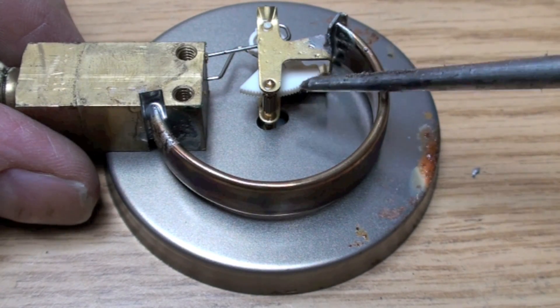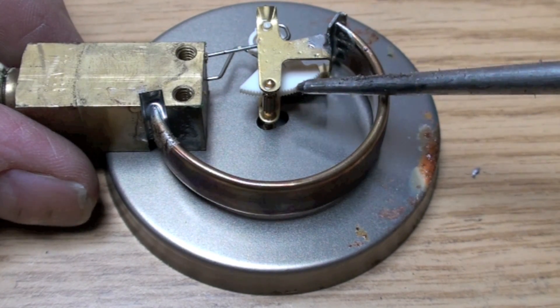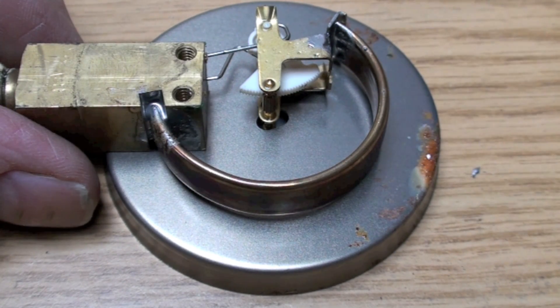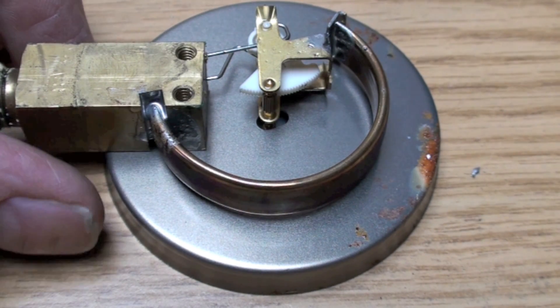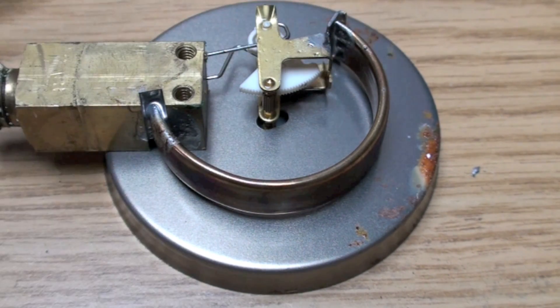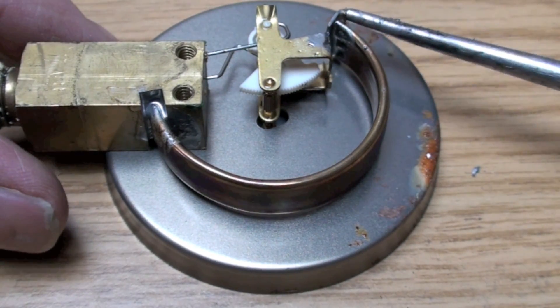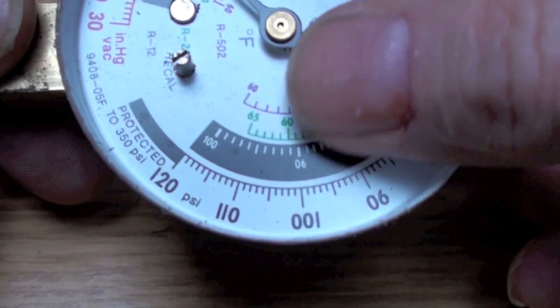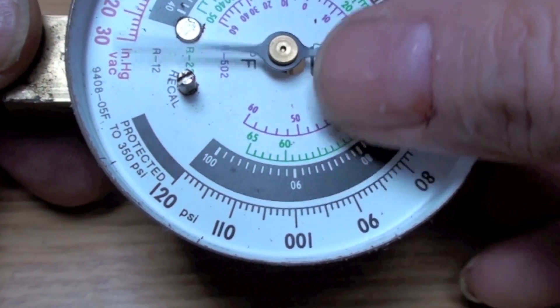Now you can see that little gear. Now that gear, it's actually just a sector of a gear here. When it moves because this Bourdon tube stretched out a little bit, it rotates this dial.